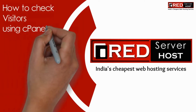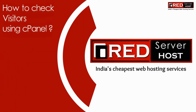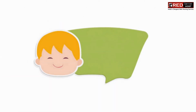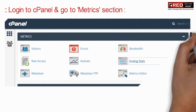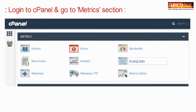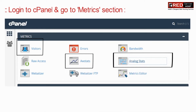Today in this video we will learn about how to check visitors using cPanel. For that, login to your cPanel and then go to the Metrics section. There you will find several options like Visitors, AWStats, Analog Stats, and Webalizer.